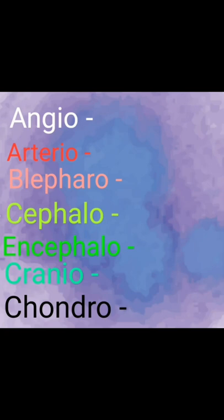Next one is arterio. In the words, it's an artery. For example, arteriosclerosis — a condition seen in old age patients. So arterio means artery, as in arteriosclerosis.